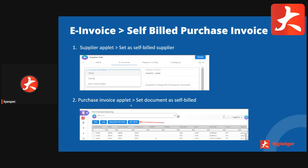The second way is if you don't set the supplier as self-bill, you can also do so by creating the purchase invoice, then selecting the purchase invoice and clicking on self-bill. This will also mark that document as a self-bill purchase invoice.